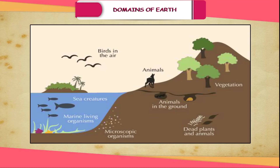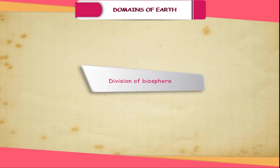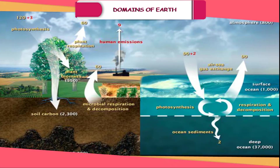All living organisms, including human beings, are linked to each other and to the biosphere for survival. Only human beings belong to a single species, while plants and animals belong to thousands of species. The organisms in the biosphere can be divided into the plant kingdom and the animal kingdom.